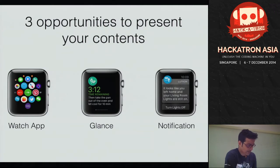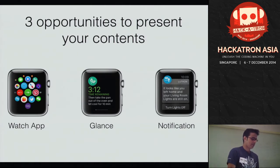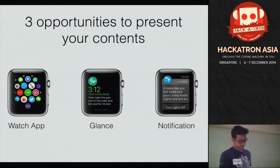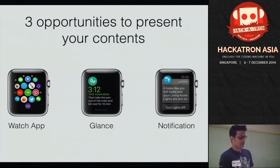There are three ways you can present your contents. One is basically the Watch app which you can launch from the home screen of the Watch — that's where most of your focus will go. There is another interface which is a glance. This provides minimum information to your user. You can think about this as a Today Extension if you've used iOS 8 and seen the notification center — you can drag the notification center and see different things in the Today Extension.